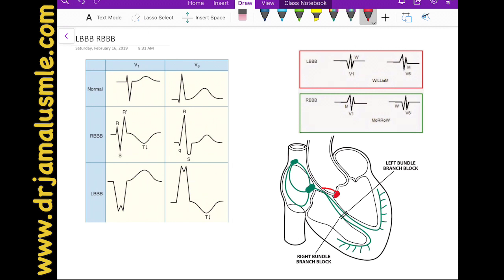And since the left bundle depolarizes first, it will look towards the right bundle, and that will create an initial Q wave, an initial negative wave in V6, as you can see here.